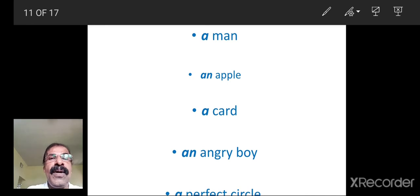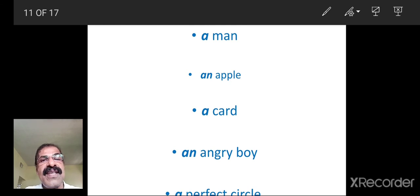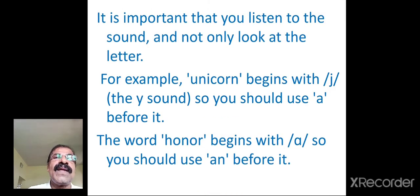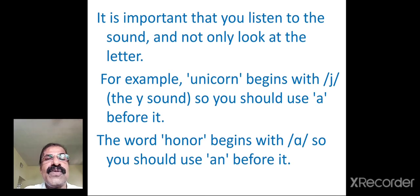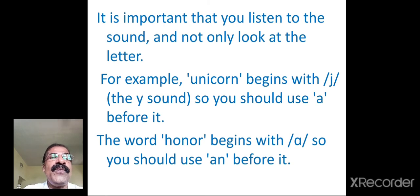If a word begins with a consonant sound, use 'a.' If it begins with a vowel sound, use 'an.' Don't look at the letters — concentrate on the sound. It is important that you listen to the sound and not only look at the letter. For example, the word 'unicorn' begins with a 'Y' sound — that phonetic symbol you see is not the letter J, it represents the Y sound.